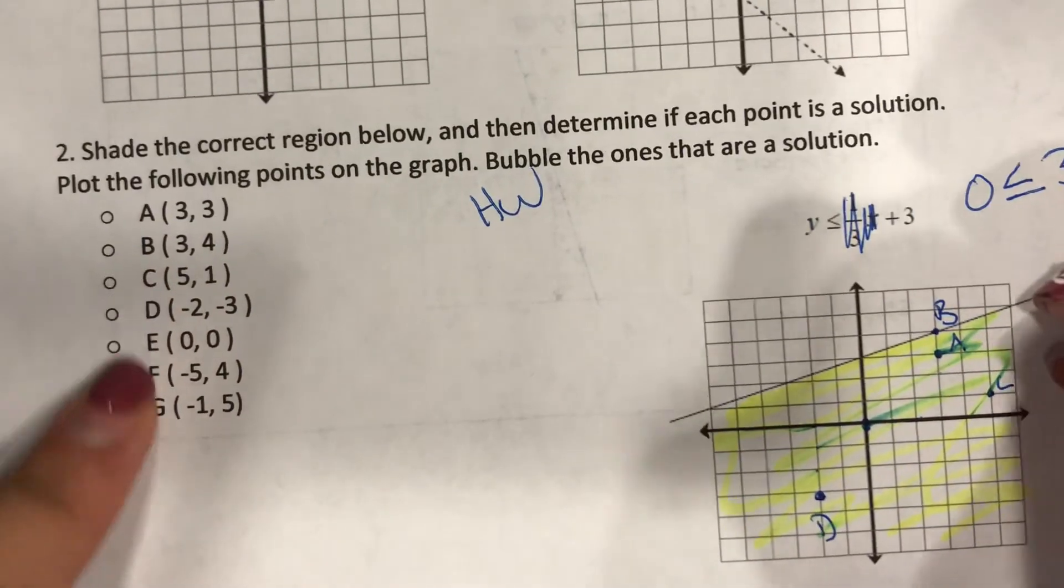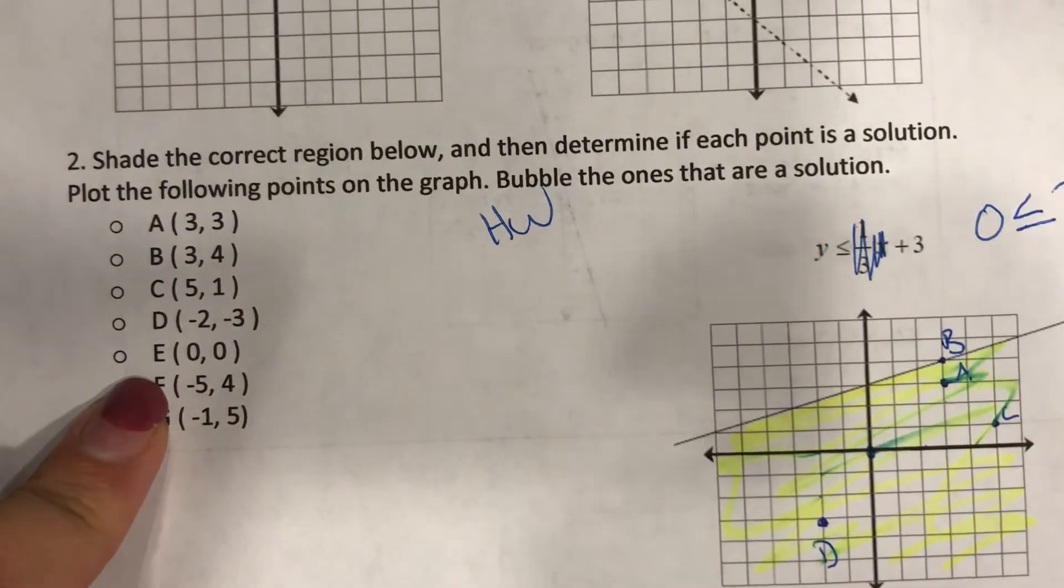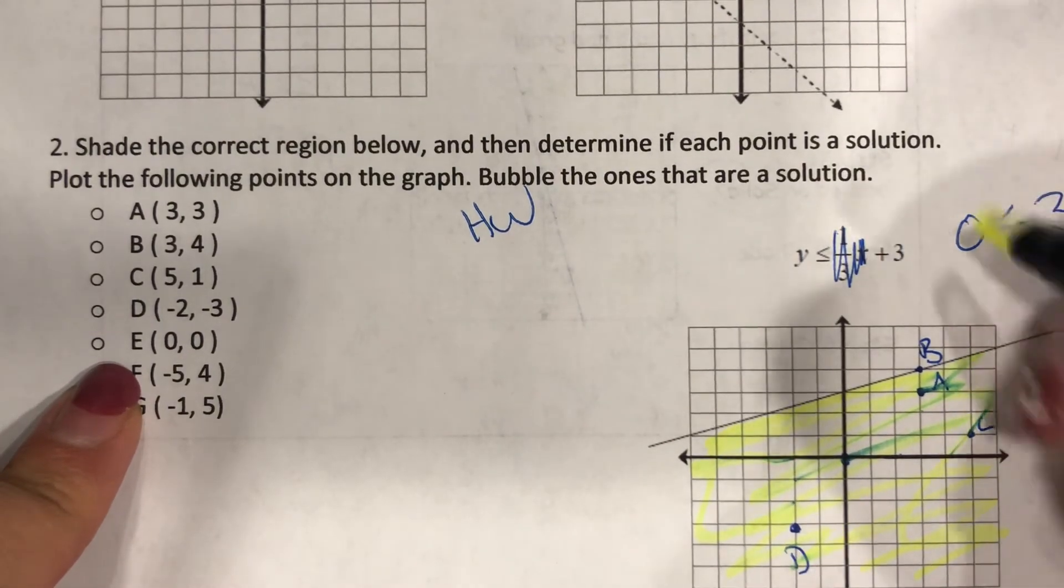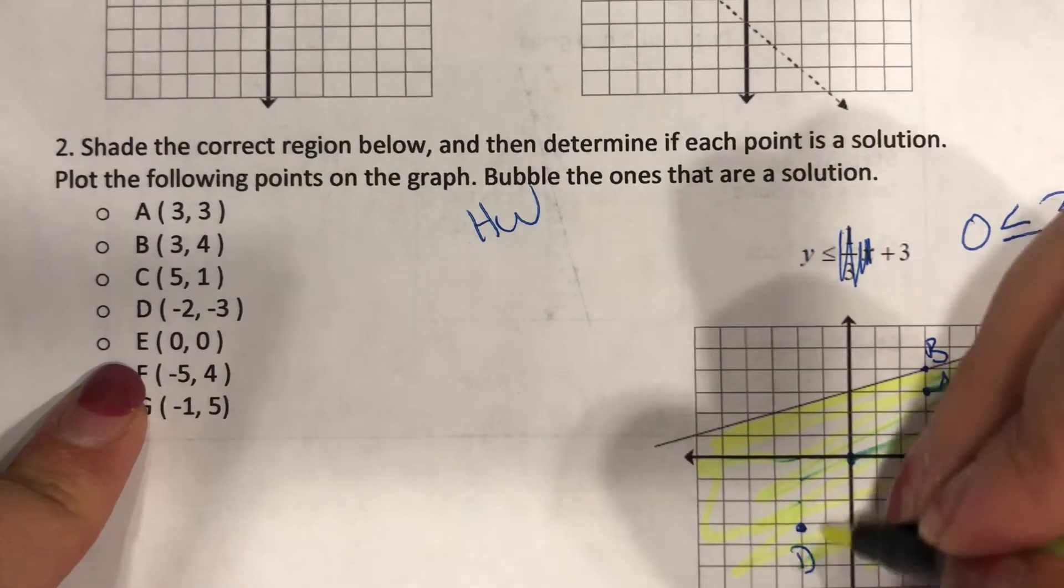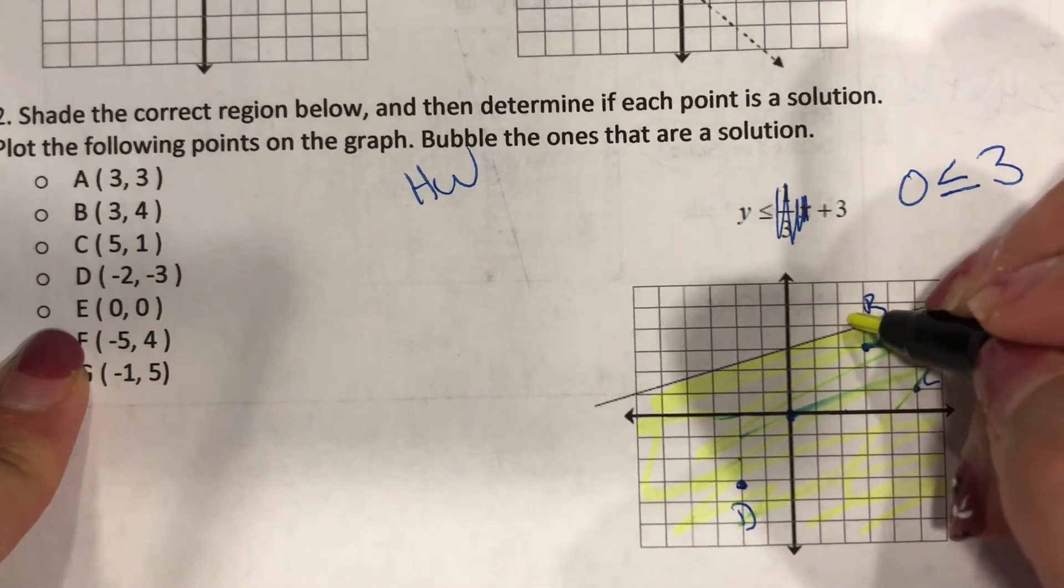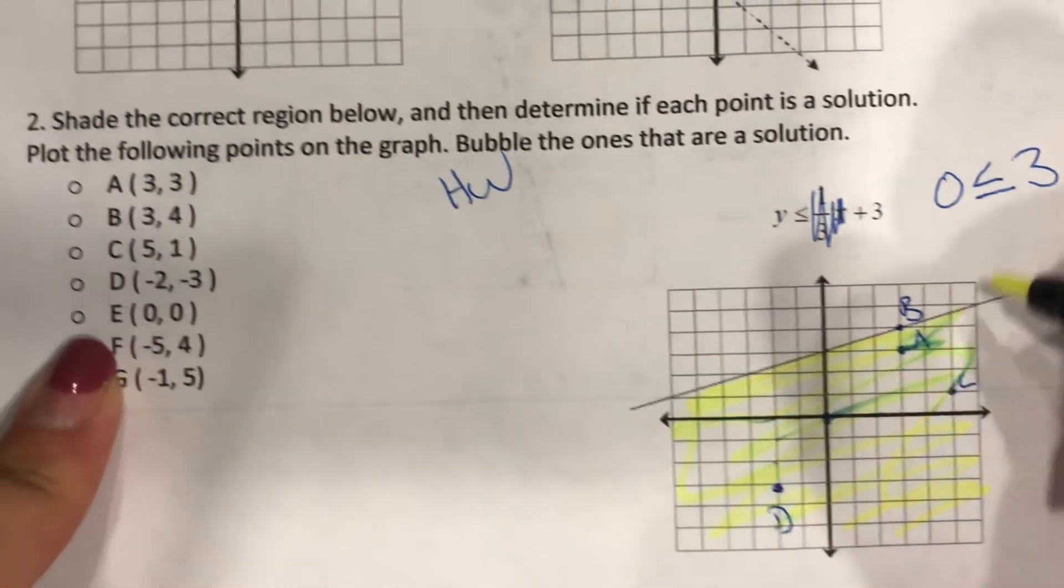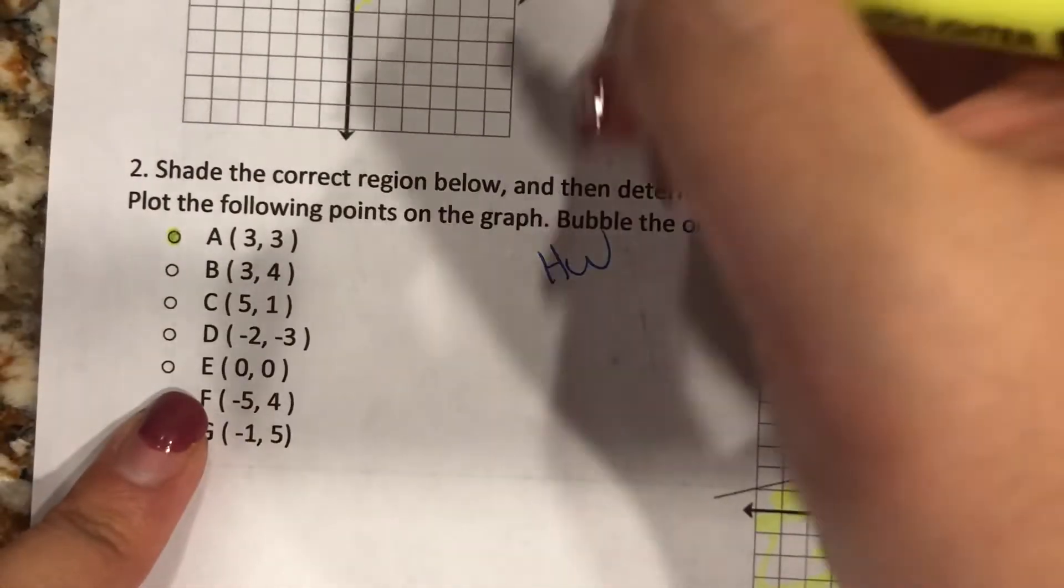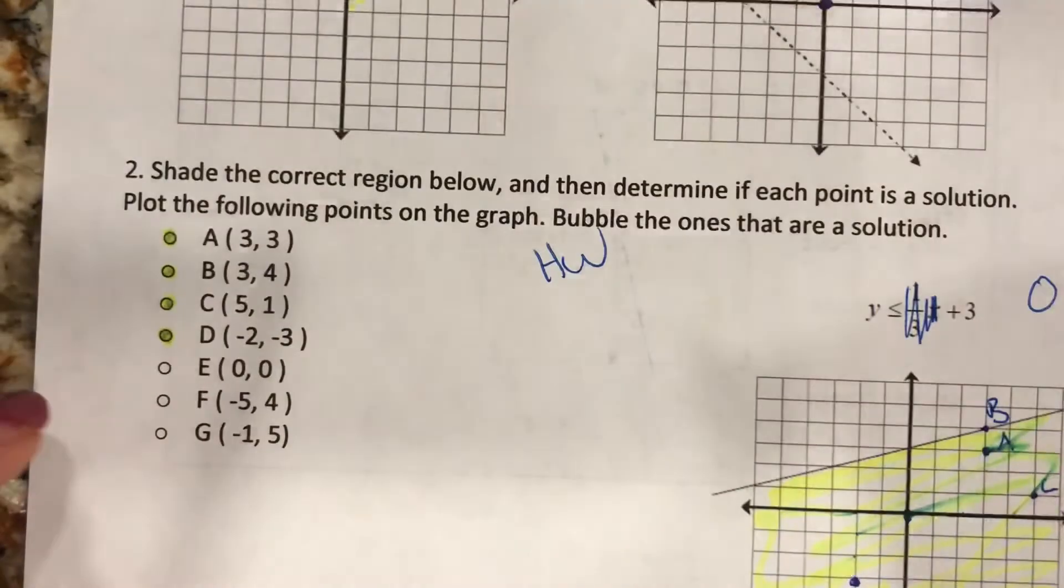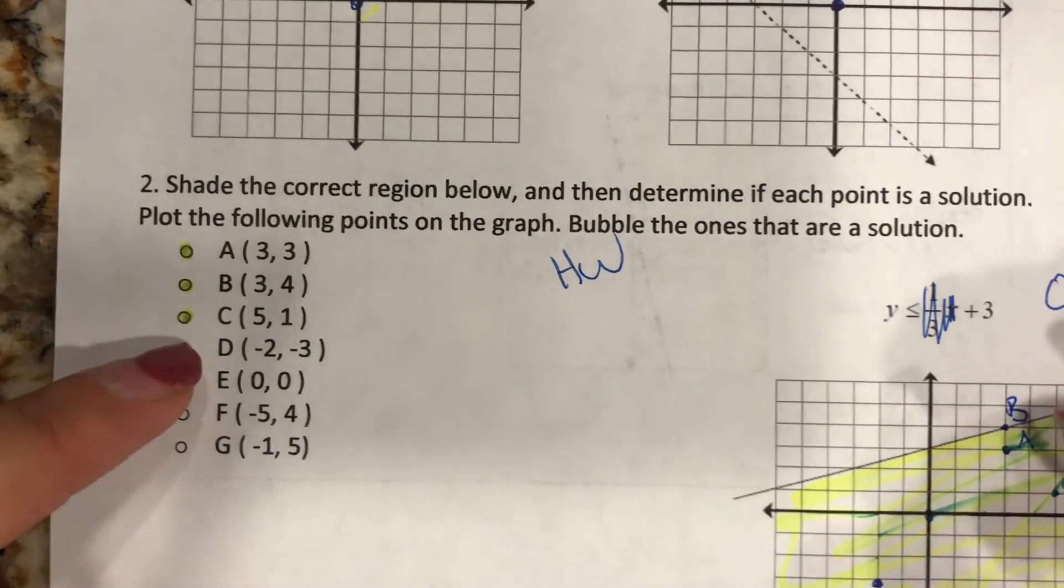So I want to know by highlighting which ones are part of my solution. So far A, B, C, and D - all of them, and even D, even B, since it's on the line, are part of my solution. So I'm going to highlight that one, highlight that one, highlight that one, and highlight that one. So I did half, now you do